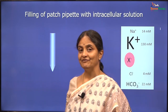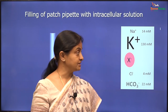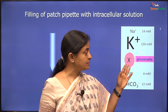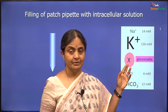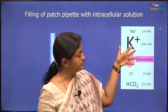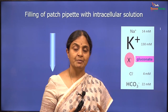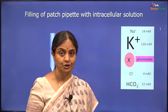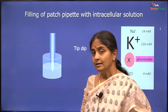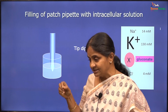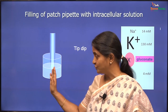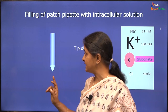The patch pipette is filled with an intracellular solution: potassium at 130 millimolar, and an impermeant anion such as gluconate or methane sulfonate — potassium gluconate or potassium methane sulfonate are common choices. The pipette is inserted into a beaker of this solution; it rises through the tip by capillary action, which is the best way to fill that portion, and the rest is filled from above with the same solution.